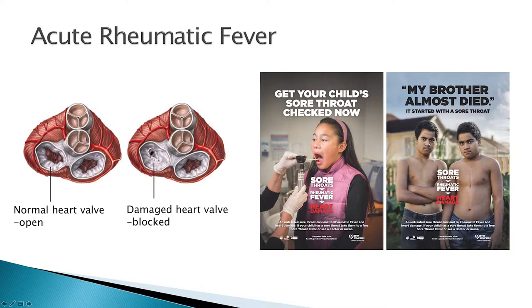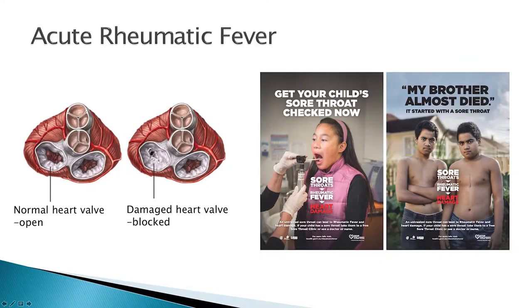What happens with rheumatic fever is you get infected with Group A Streptococcus, and several weeks later — for some reason we don't understand — in some people the immune system goes haywire and starts attacking the heart. Up here you can see a healthy heart; I've pointed out a normal heart valve — this is what opens and closes to pump blood around your body. When the immune system attacks it, you essentially get scar tissue forming there; it can't open, it can't close properly, and a lot of these patients will die from heart failure before middle age.